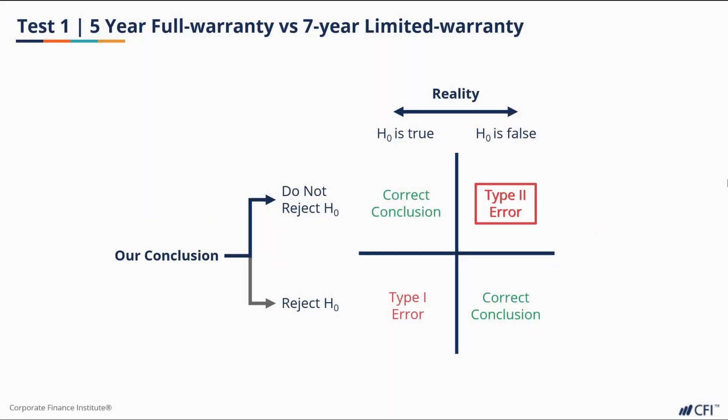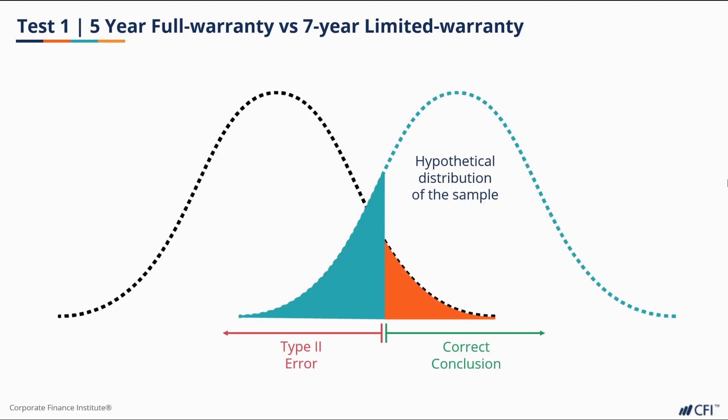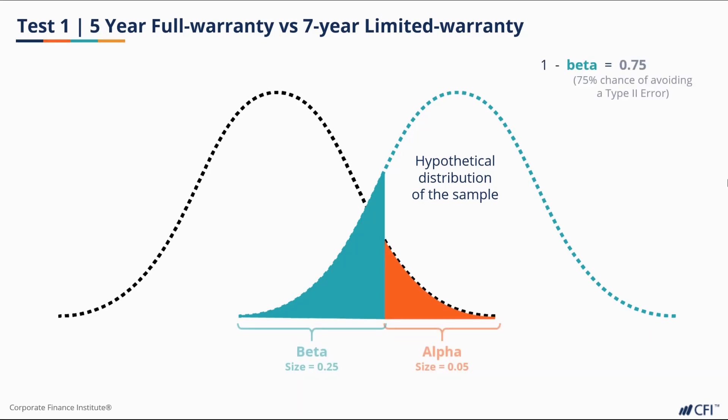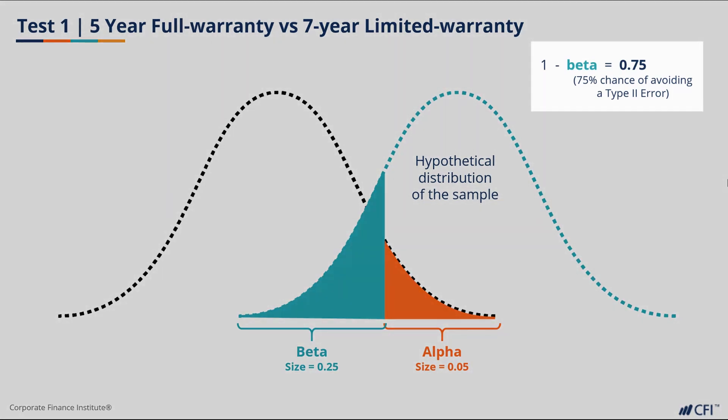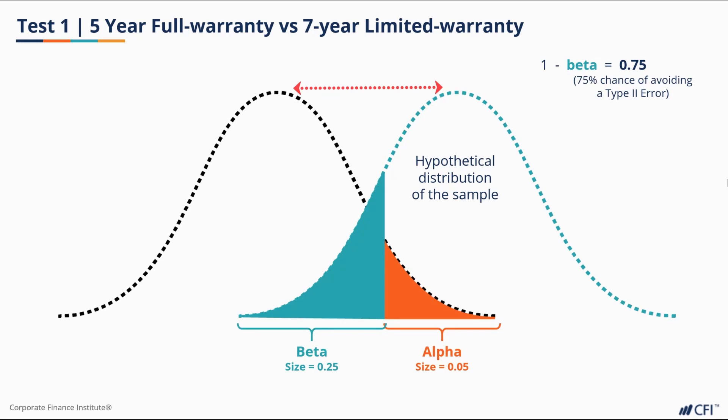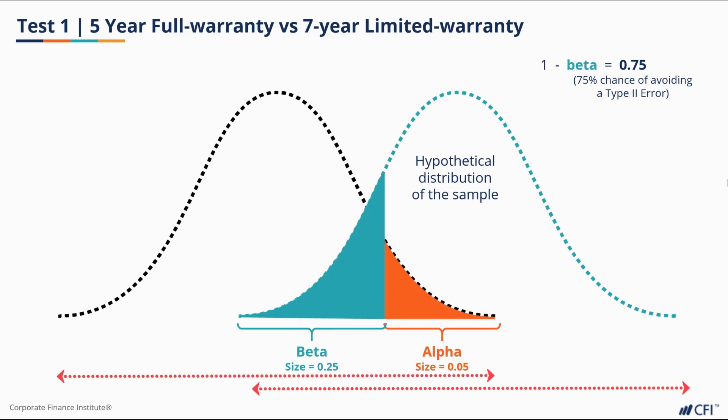To visualize this, let's pretend our samples are different and insert an imagined distribution for our second sample. In this visualization, any sample means drawn from the area highlighted in blue would show up in our test as a type 2 error. We call this area beta. The probability of correctly rejecting the null hypothesis when the alternative hypothesis is true is 1 minus beta. The size of beta depends on the difference between our means, the spread of our distributions, and where we set our alpha.